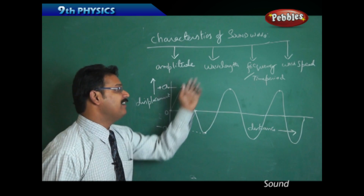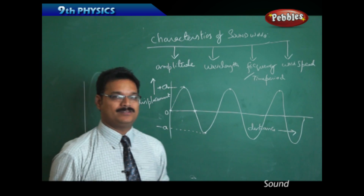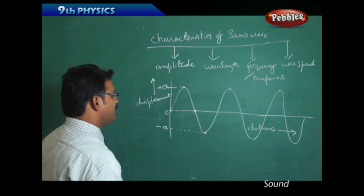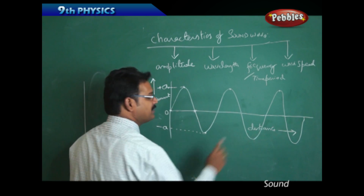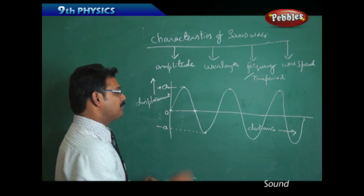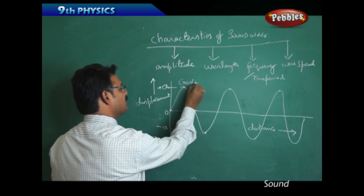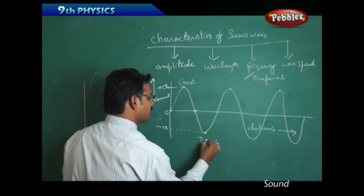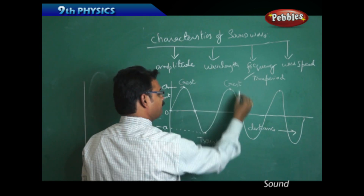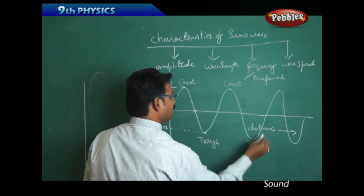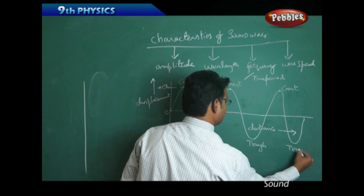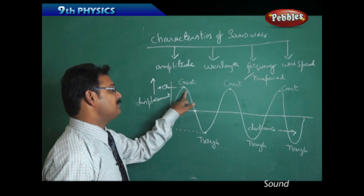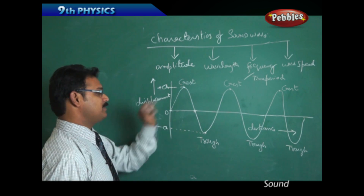The second characteristic is wavelength. Wavelength is the distance the wave is traveling, but we represent it specifically on the waveform. The positive peaks are called crests — C-R-E-S-T — and the negative peaks are called troughs. So on the waveform: crest, trough, crest, trough. A crest corresponds to compression — maximum pressure and maximum density.